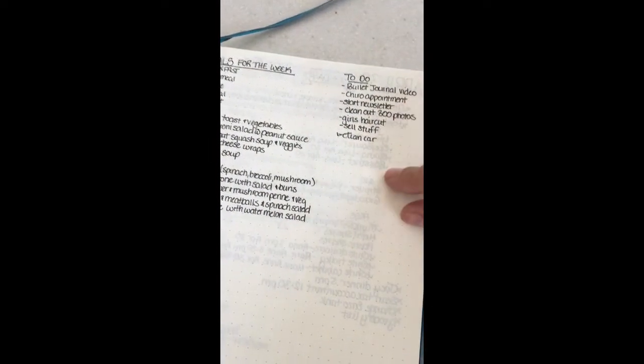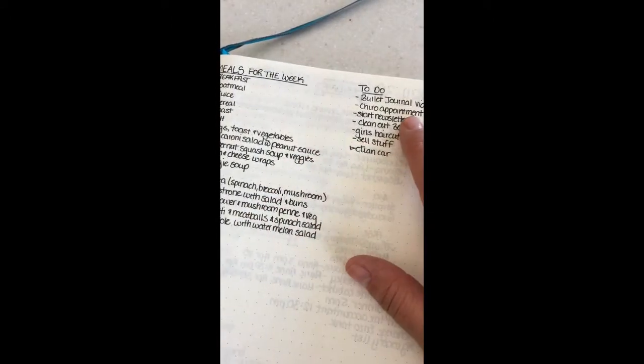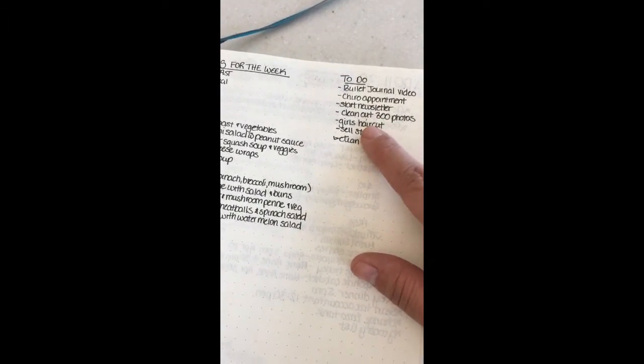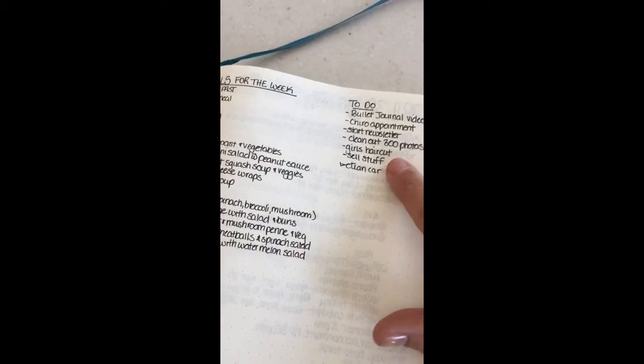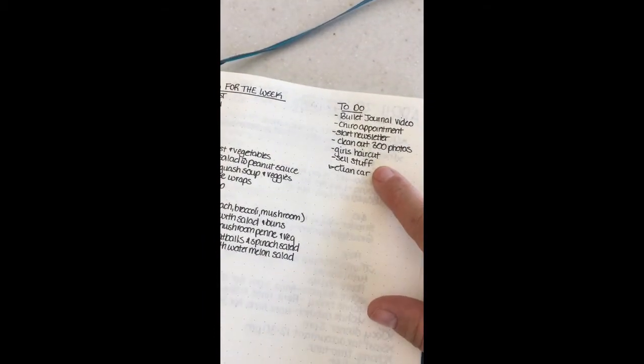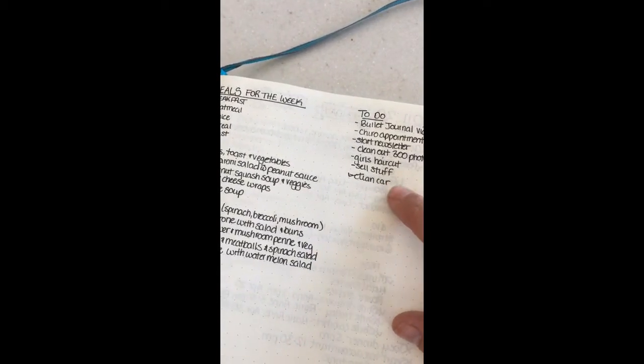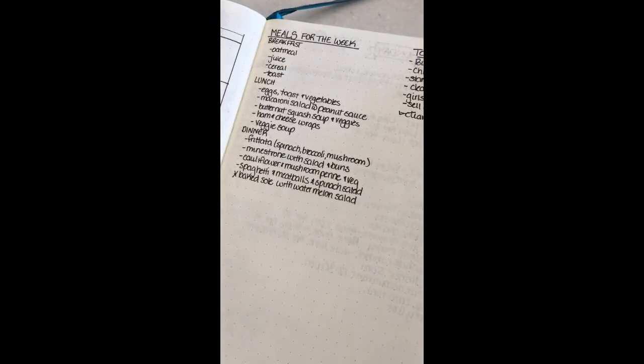So my weekly goals for this week are to do a bullet journal video, yay, doing it right now. I have to make a chiropractor appointment. I have to do my newsletter for my business. I really need to clean out my iPhone storage because we are going on a trip later this month and I don't want to run out of storage. I needed to get the girl's haircut, which I did today. We cleaned out our garage and shed this weekend. So I have some stuff to sell and I have to clean my car, which I did yesterday. So once I've gotten my small to do list for the week, which is partly here again, and partly based on my May monthly goals, then I go into my daily planning.